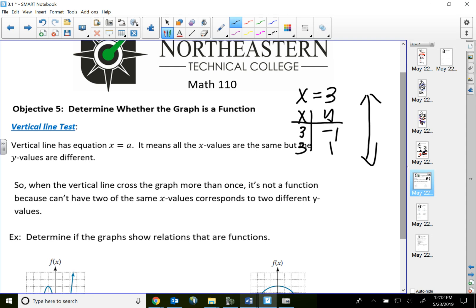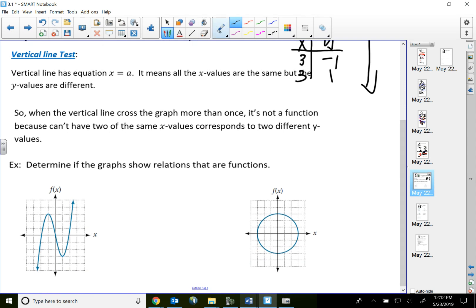So the key characteristic for a vertical line is it consists of all the same x value. So it can't touch the graph more than one time.